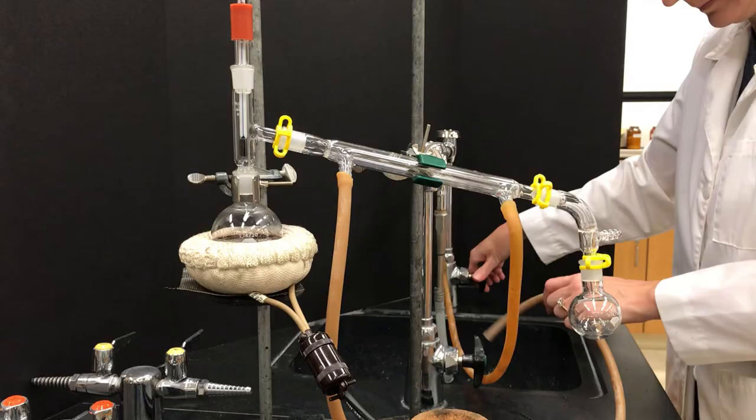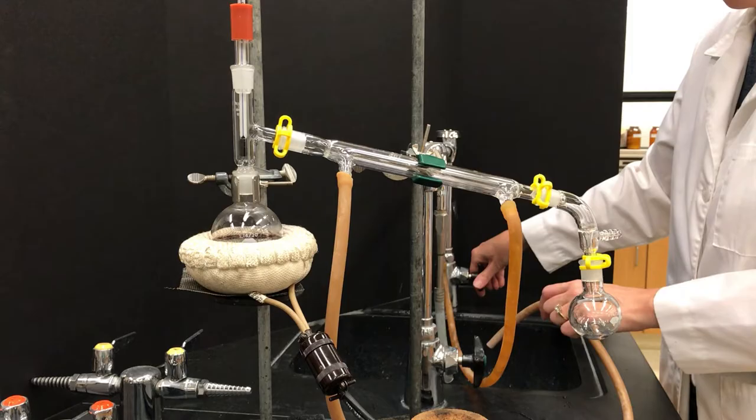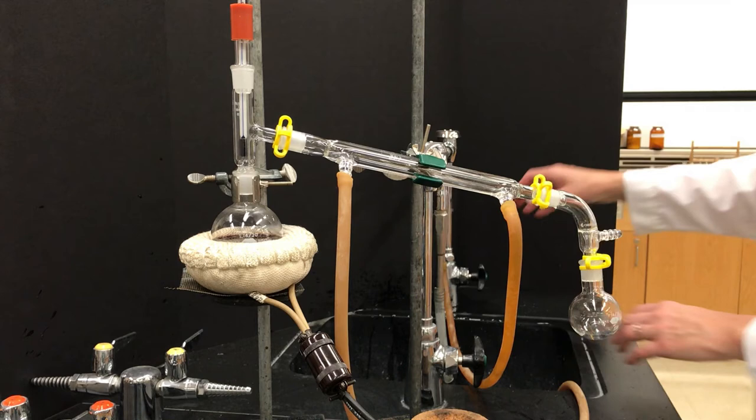Once we are heating it, it is important to start having water running through the condenser, so you're going to turn on the faucet. Turn it slowly at first—if you just crank it, then it's likely that those hoses are going to pop off—so start slowly and then make sure some water is going through the condenser. It goes in through the bottom, out through the top, and drains into the sink.